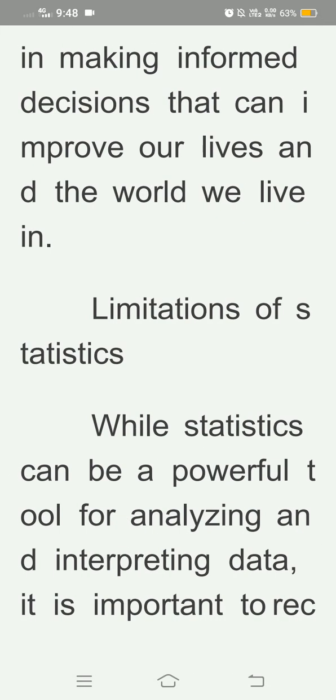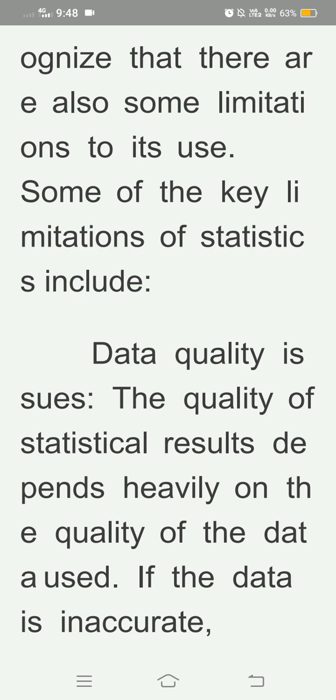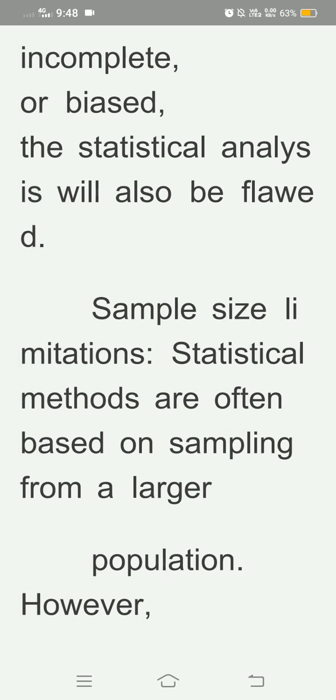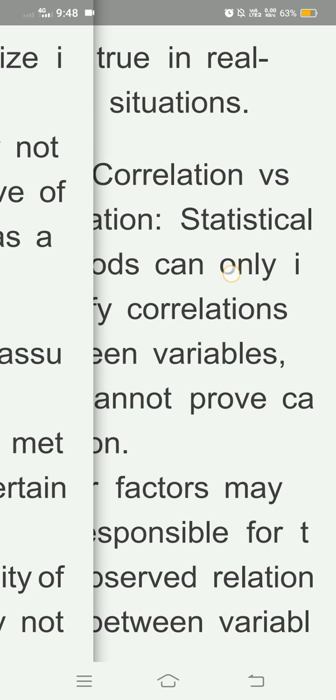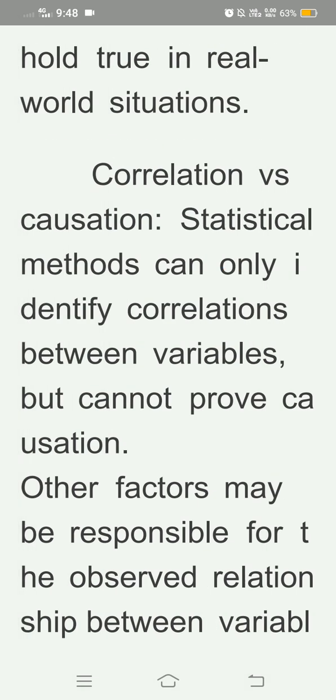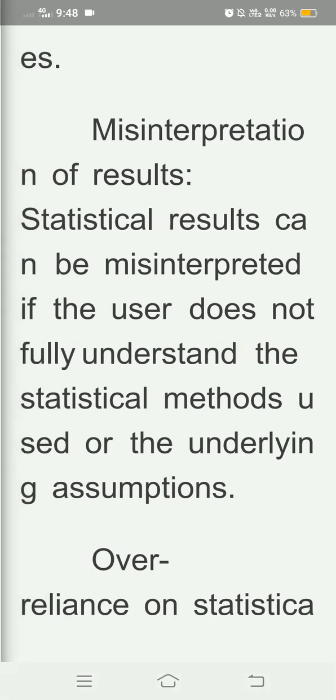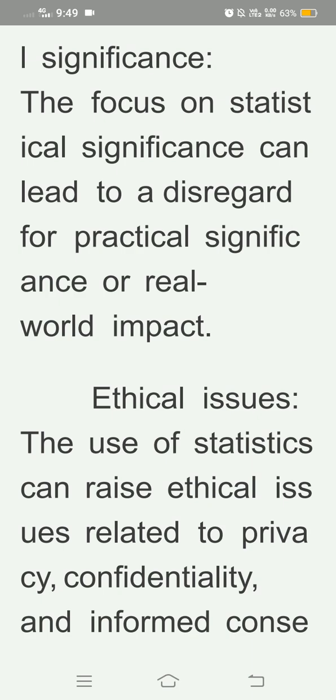The major limitations of statistics include: data quality issues, sample size limitations, statistical assumptions, correlation versus causation — meaning statistical methods can only identify correlations between variables but cannot prove causation, as other factors may be responsible for the observed relationship between variables — misinterpretation of results, and over-reliance on statistical significance, along with ethical issues and other factors.